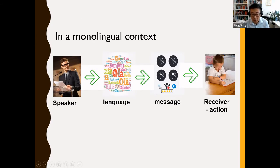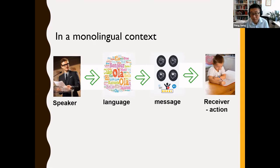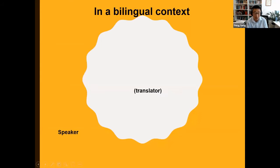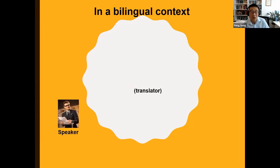This is a situation in the monolingual context — both the speaker and the receiver understand the same language, which guarantees that the message can be conveyed from the teacher to the student. However, in a bilingual context, where there are two languages, if the speaker and the receiver cannot communicate through one language, a translator is needed.